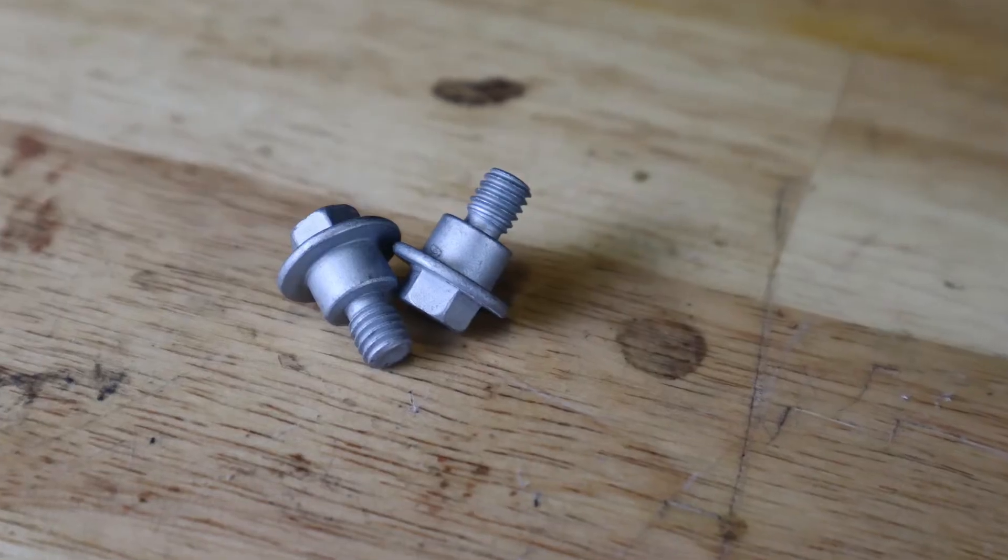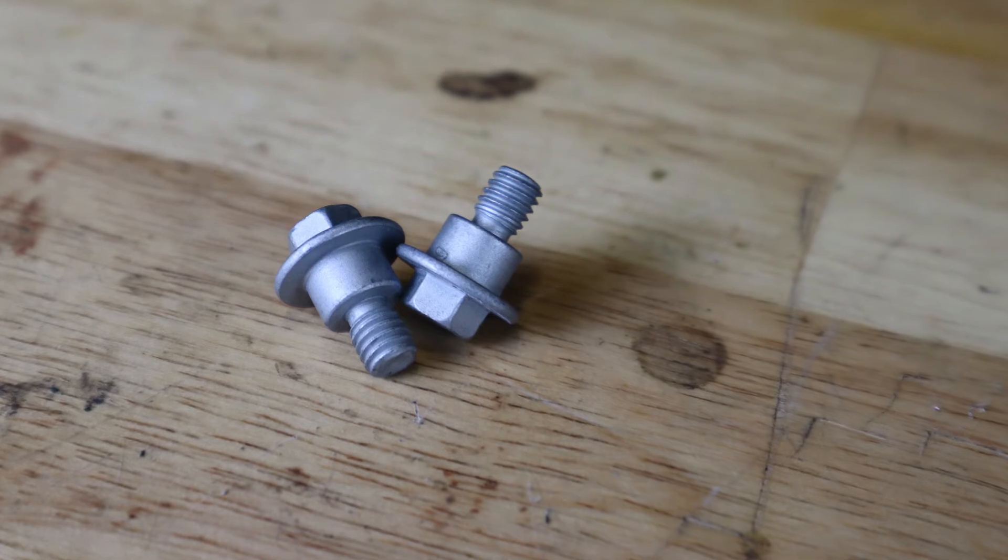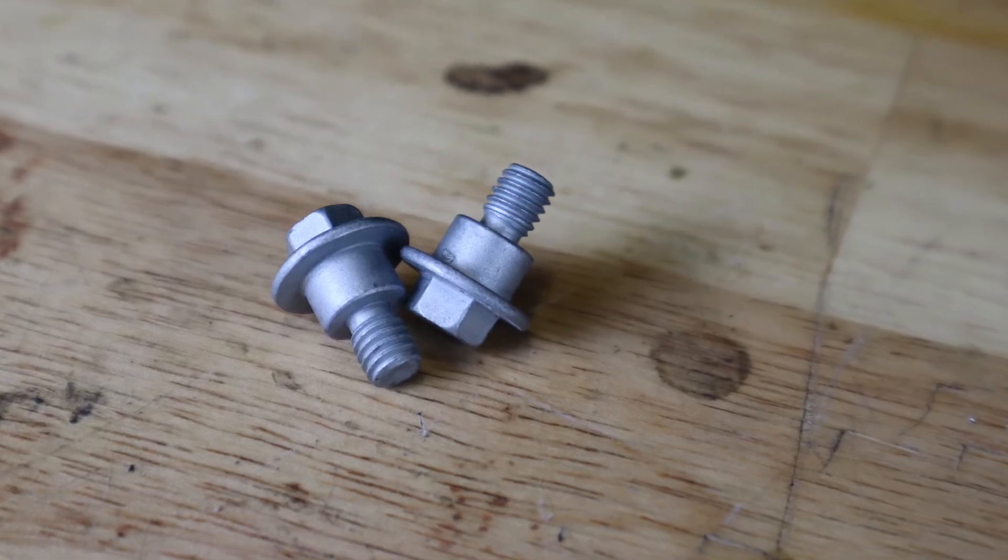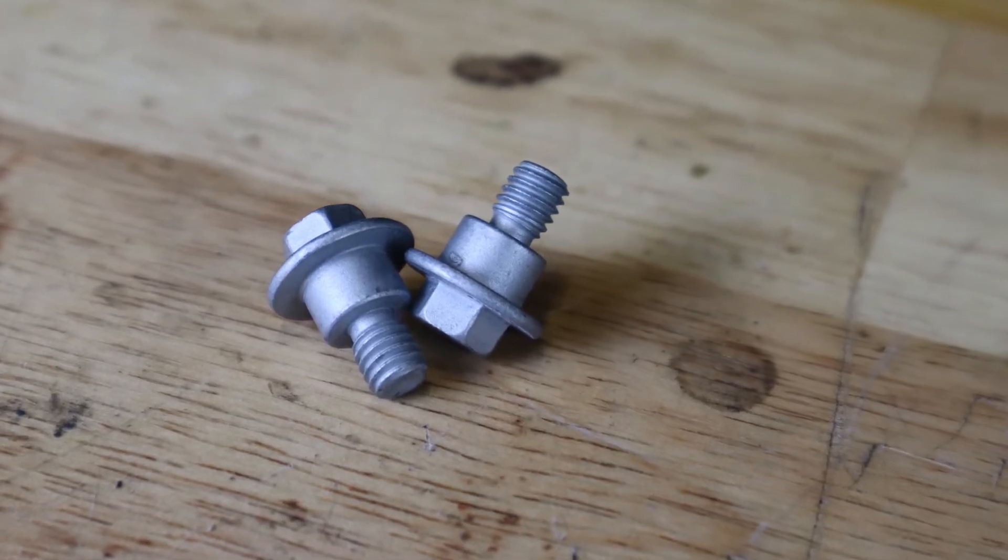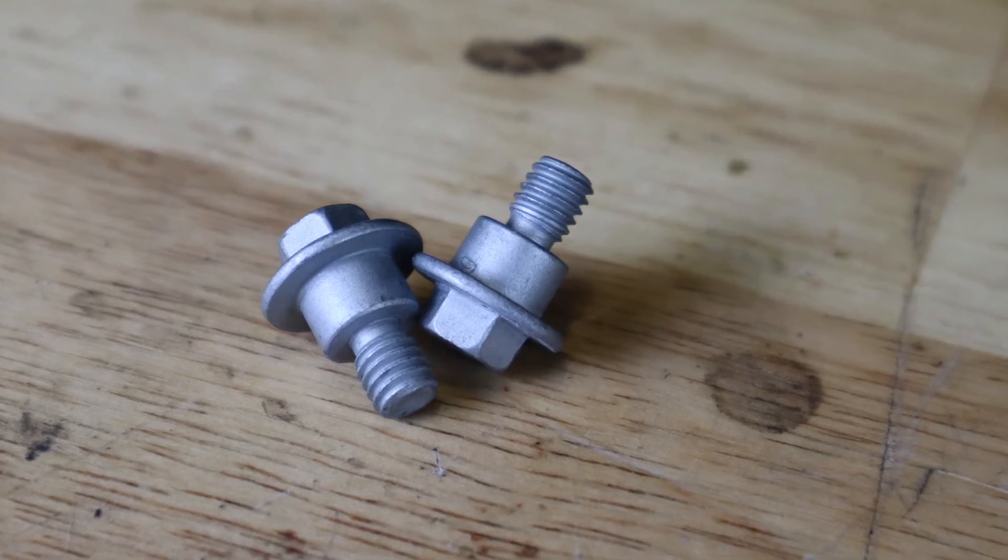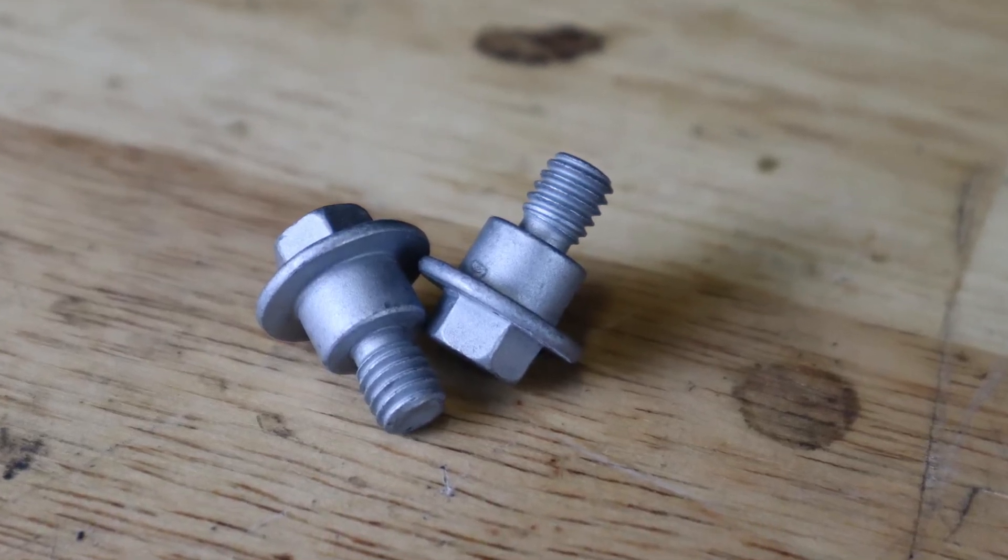These are pretty standard on a lot of the different KTMs as body bolts. They have this big shoulder right here and a very short threaded part. Another bolt that's going to be really tough to find. This kit comes with six of them.